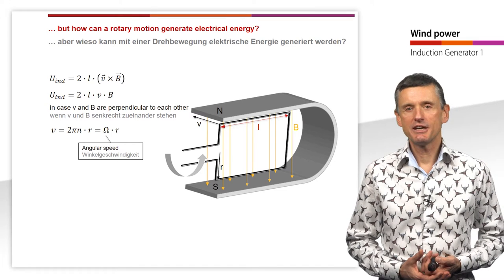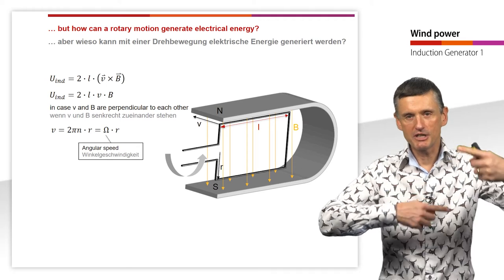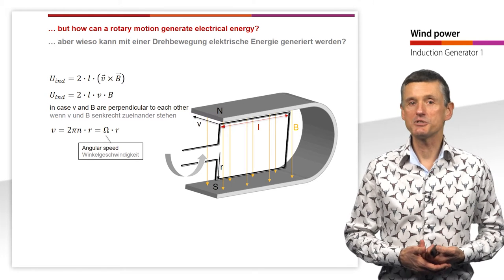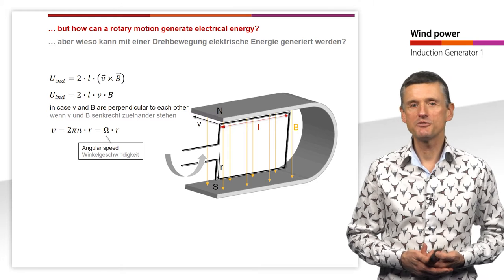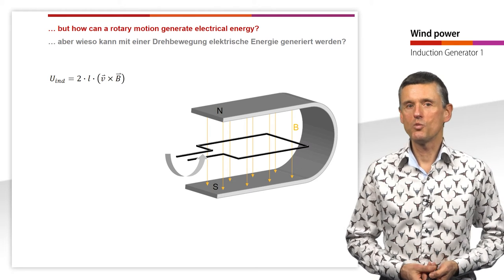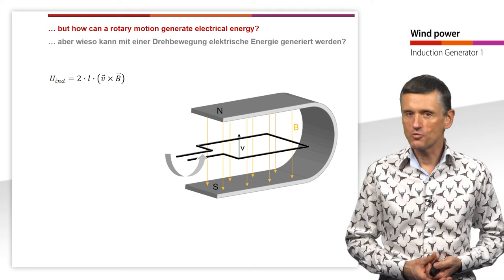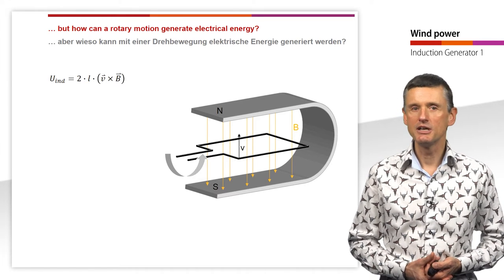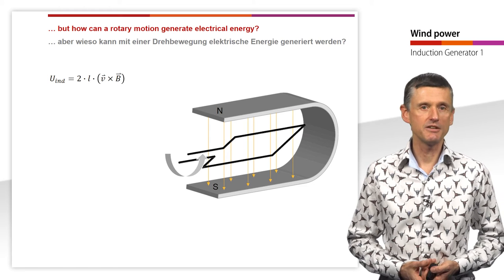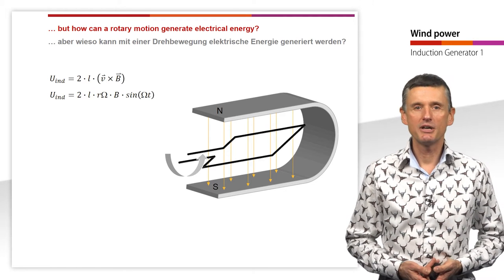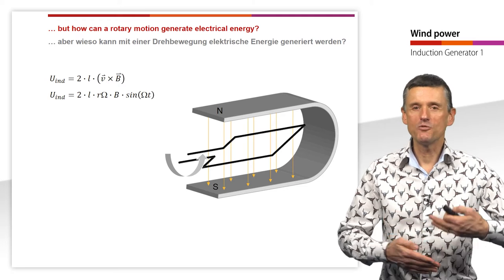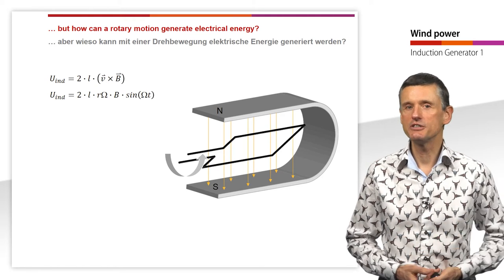We can express the radius R of the virtual cylinder described by the wire, so V equals 2π times speed N times R, which also equals angular speed omega times R. At a 90-degree rotated position, vector V is in the same direction as vector B, and the induced voltage is zero. At any other position, the induced voltage is 2·L·R·omega·B·sin(omega·t), which explains why we always have sine waves of generated electricity.